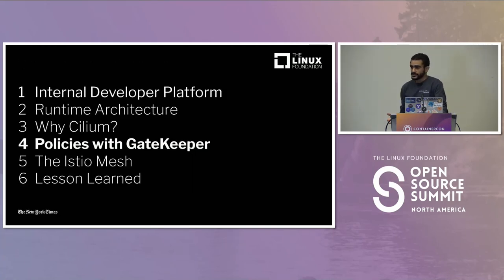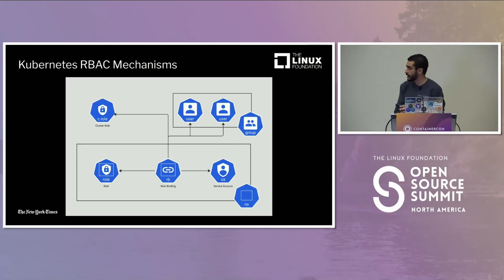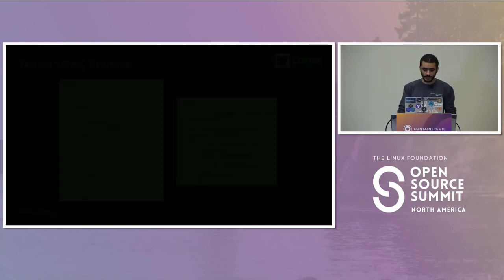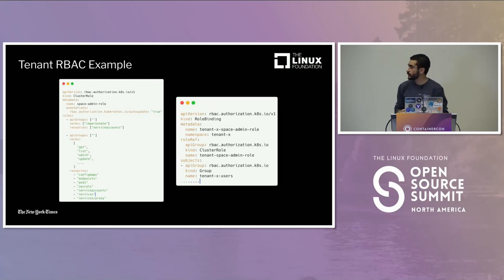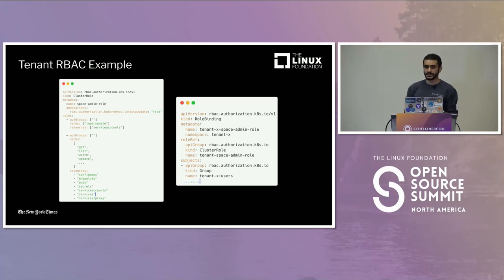Now let's talk about RBAC and how we provide tenants control in the clusters. In Kubernetes, the RBAC mechanism uses namespaces, role bindings, and roles. You can have cluster roles attached to a role binding giving a user access to specific namespaces and resources. In our setup, we have a single cluster role applied across the entire cluster, and for each tenant we create a role binding in their automatically created namespace, so they can manage all resources they need — specific API groups, verbs like get, watch, update, delete — for resources like ConfigMaps and endpoints.